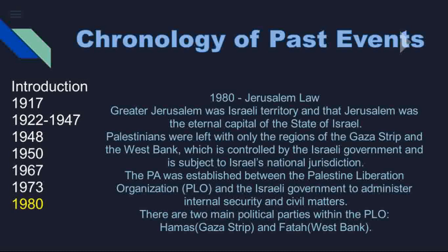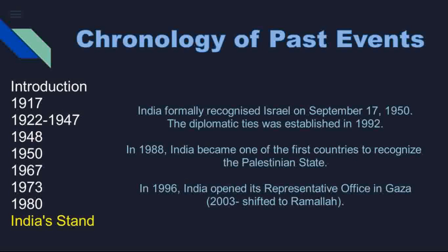There are two main political parties within the Palestine Liberation Organization: Hamas and Fatah. Fatah has a stronghold in the West Bank region, whereas Hamas has a stronghold in the Gaza Strip region. Hamas has been declared a terrorist organization by Israel.